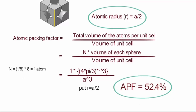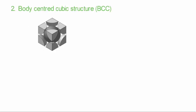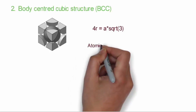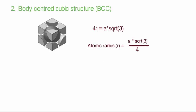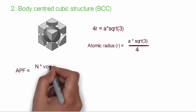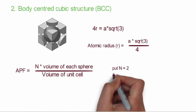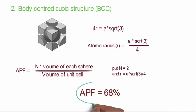For body centered cubic, there is an atom at the body center. Drawing a body diagonal, it equals 4 times the radius of the sphere. So 4R = √3 × A, giving R = A√3/4. In BCC there is one extra atom at the center, so the effective number of atoms is 2. Putting n = 2 and R = A√3/4, we get an atomic packing factor of 68%.